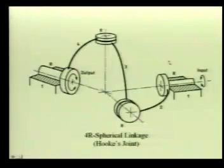The next figure shows what is known as a 4R spherical linkage. Here again we have four rigid bodies connected by four revolute pairs, but the axes of all these four revolute pairs intersect at one point.